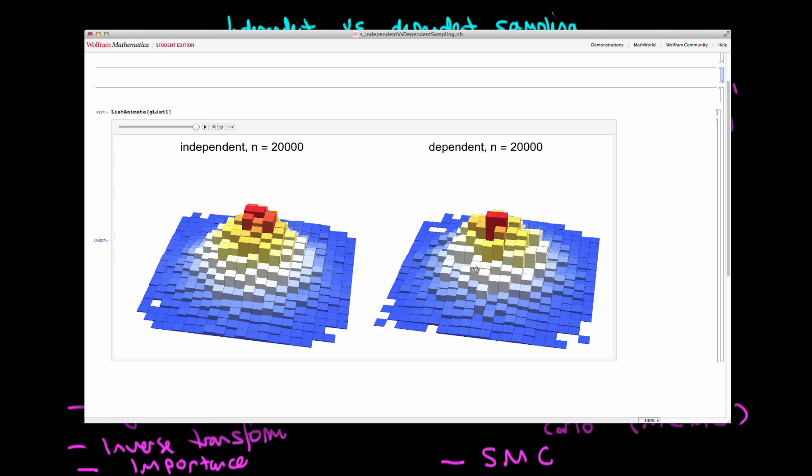While I've used a simple example here to illustrate the differences between independent and dependent sampling, these differences hold for more complicated examples. Dependent sampling in general is much more inefficient than is independent sampling. A way of gauging that cost is through the concept of effective sample size, which I describe in a different video.